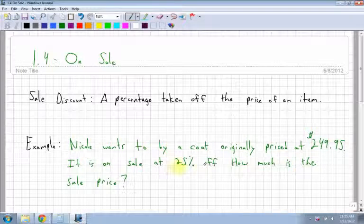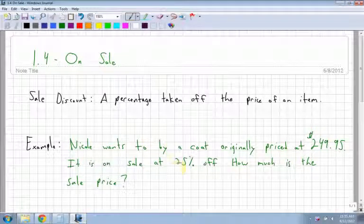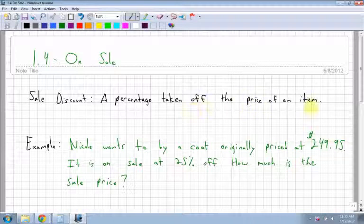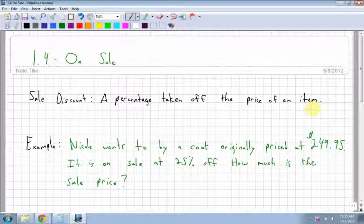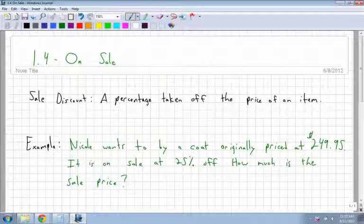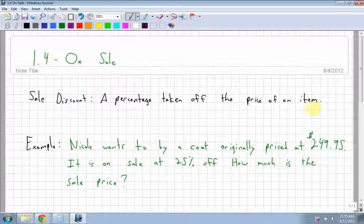Section 1.4 is what's called on sale. A sale discount is a percentage taken off the price of an item. Last chapter we looked at markup, how they charge more for an item to cover the costs of their store. Now we're going to look at a sale discount.